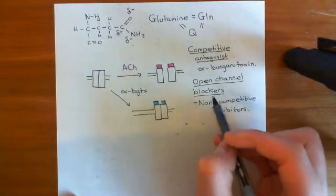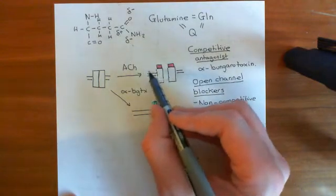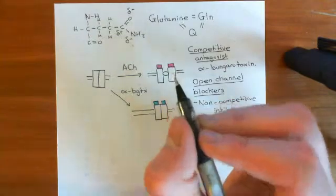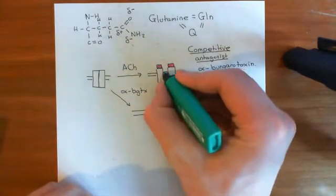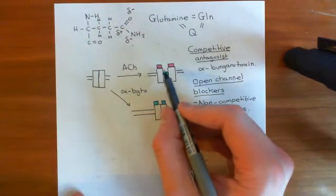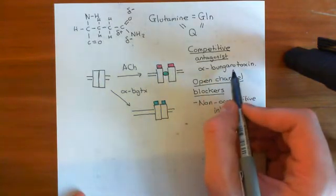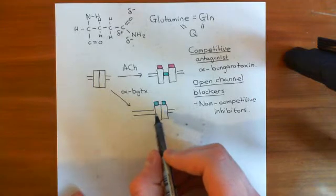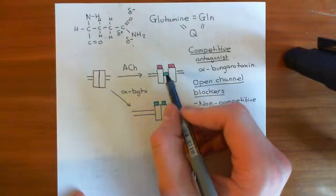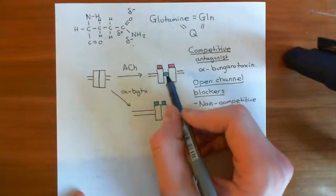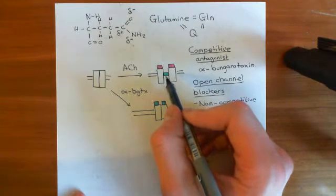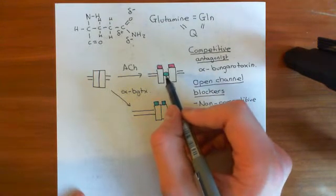What an open channel blocker does is: when acetylcholine binds the receptor and it opens, the drug goes into the pore and binds to the open channel, blocking it. This has absolutely nothing to do with how alpha-bungarotoxin worked - this is a very different mechanism. It allows acetylcholine to bind to the receptor, but when the receptor opens, the drug goes into the channel and blocks it.